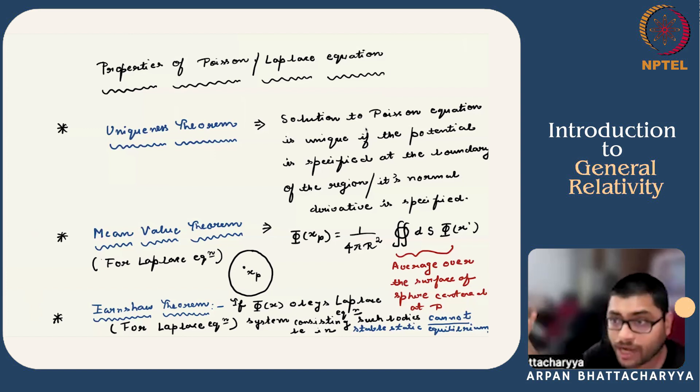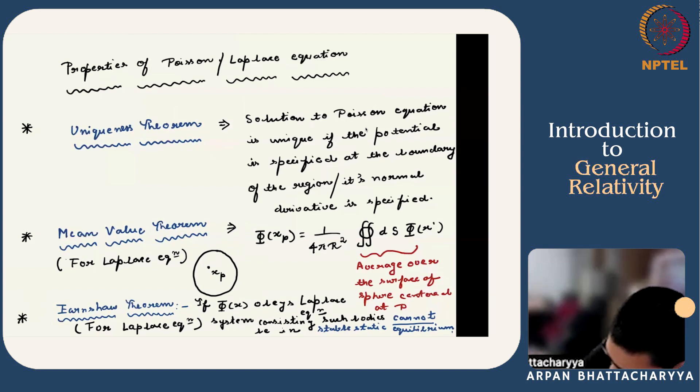Try to write down the general solution of the Poisson equation using Green's functions, which will be useful later on. Now we move on to discussion of gravitational potential energy.